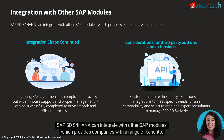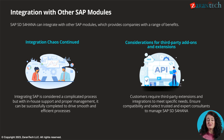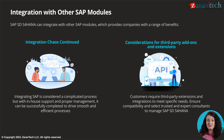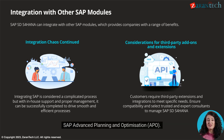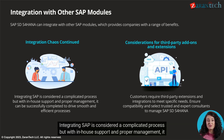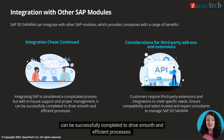SAP S/4 HANA can integrate with other SAP modules, which provides companies with a range of benefits. Some of the key modules highlighted include SAP Finance (FI), SAP Materials Management (MM), and SAP Advanced Planning and Optimization (APO). Integrating SAP is considered a complicated process, but with in-house support and proper management, it can be successfully completed to drive smooth and efficient processes.